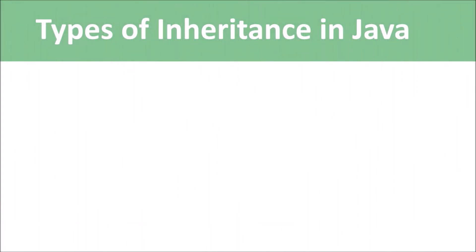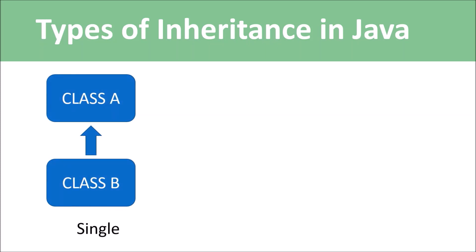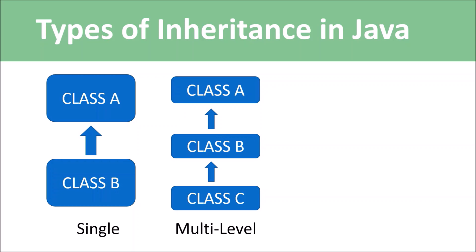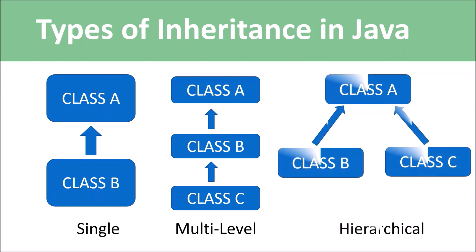Moving to the types of inheritance in Java — on the basis of class, there are three types. First is single inheritance, where a class extends only one other class; class B inherits all non-private members of class A. Second is multi-level inheritance, where class B inherits from class A, and class C inherits from class B — so C also inherits the members of class A. Third is hierarchical inheritance.